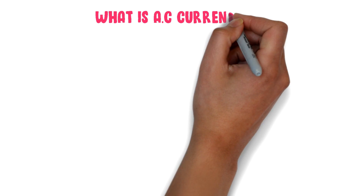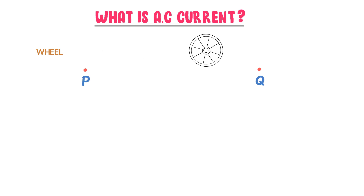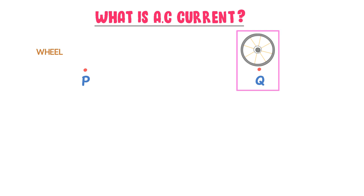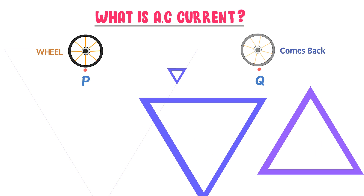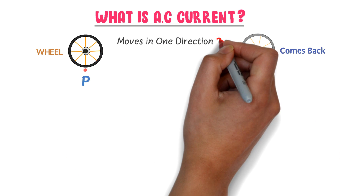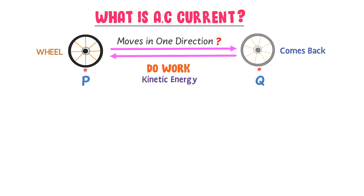Now what is AC or alternating current? Again consider two points, P and Q, and a wheel at point P. This wheel moves from point P to point Q but it never stops there — it comes back to its initial position at point P. Is this wheel moving in one proper direction? The answer is no. So the motion of this wheel has no proper direction. The wheel is also moving between two points, so it can also do some sort of useful work due to its kinetic energy.